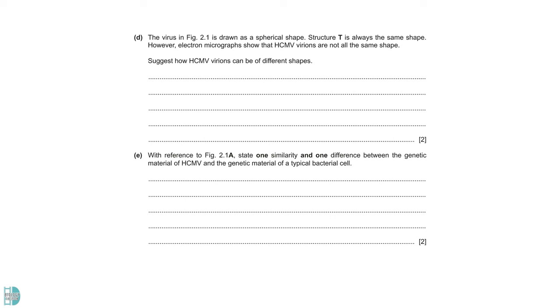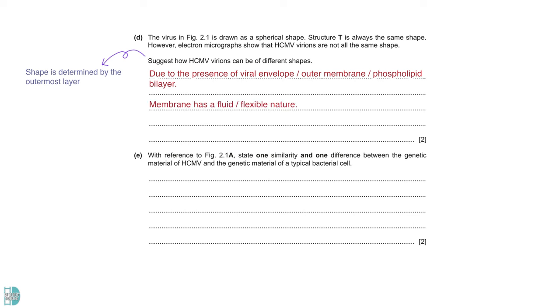Question D wants you to suggest how variants can be of different shapes. The shape of a virus you can observe under the electron microscope is determined by the outermost layer. So, it is due to the presence of viral envelope or outer membrane or phospholipid bilayer. Since membrane shows fluidity and is flexible, the shape of these viruses can be different. Another possibility is that the virus is being distorted or squashed during the preparation for electron microscopy.